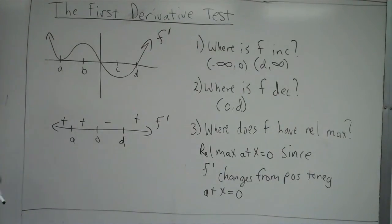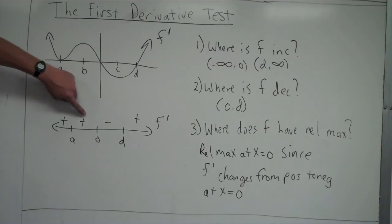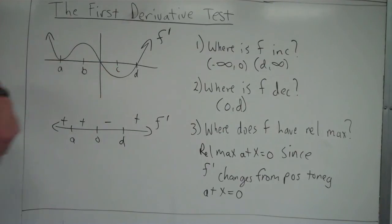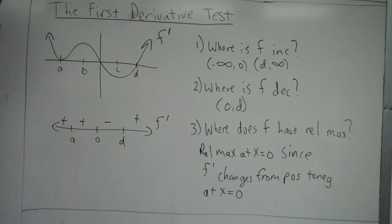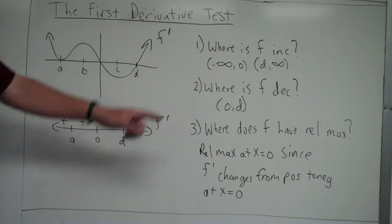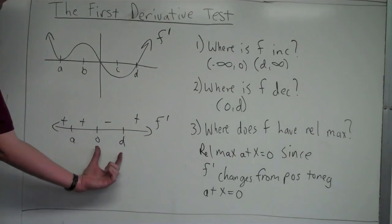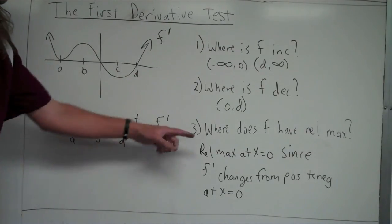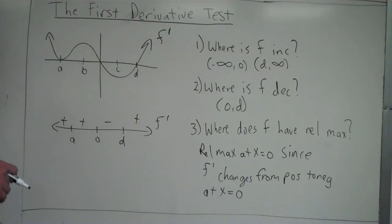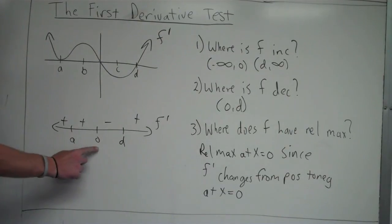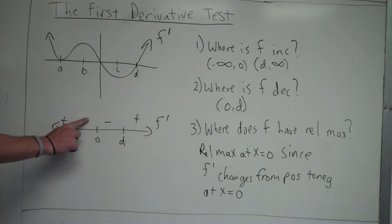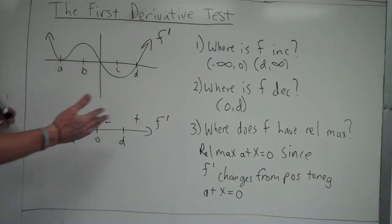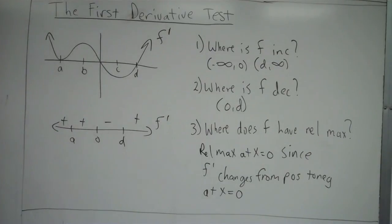I can use this sign chart to answer the questions. Where is f increasing? Where f prime is positive: from negative infinity to zero, and from d to infinity. Where is f decreasing? Where f prime is negative: from zero to d. Where does f have a relative max? That's where f prime changes from positive to negative — that happens at zero. Just another way of looking at it.